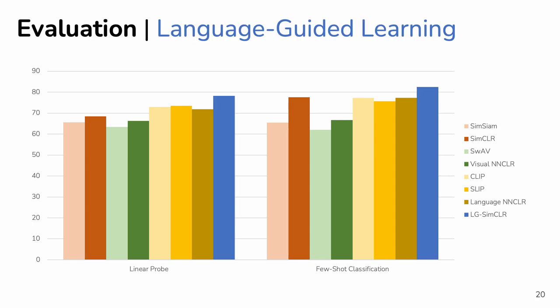Finally, through using language to guide the sampling, we observe a large performance gain on both linear probe and few-shot classification. This clearly demonstrates the efficacy of our approach and suggests that language-guided contrastive learning might be a better representation learning strategy than learning a cross-modal joint embedding.